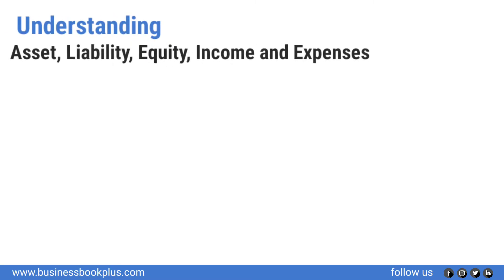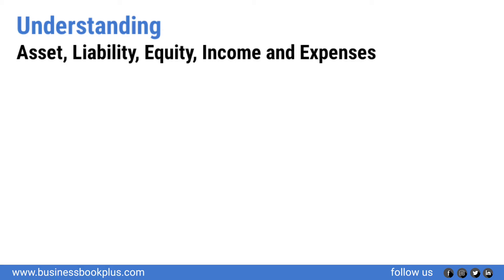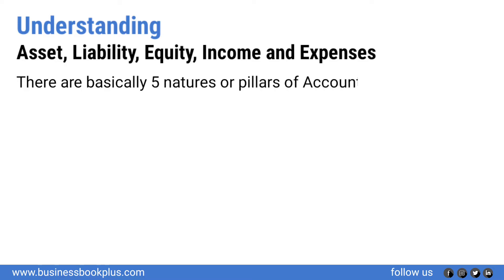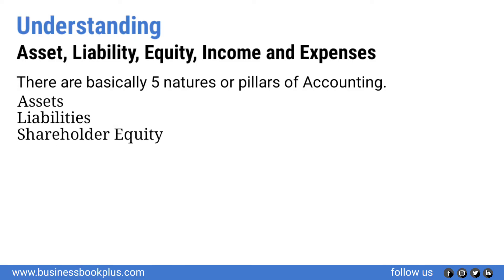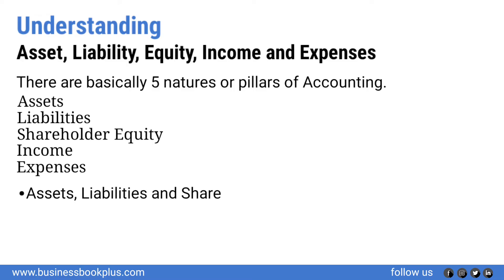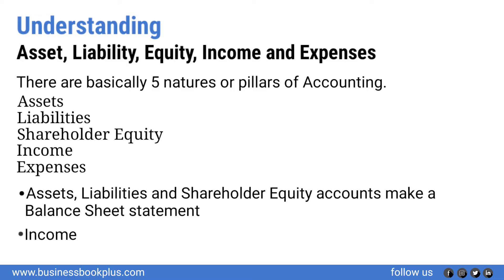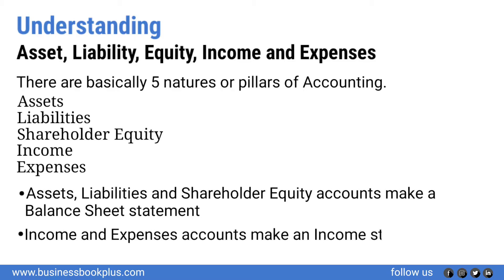There are basically five natures or pillars of accounting: assets, liabilities, shareholder equity, income, and expenses. Assets, liabilities, and shareholder equity accounts make a balance sheet statement, while income and expenses accounts make an income statement.